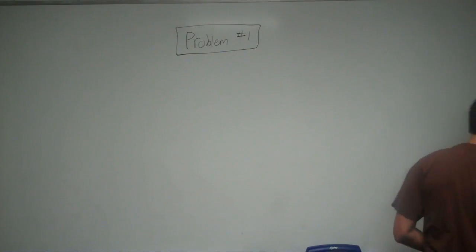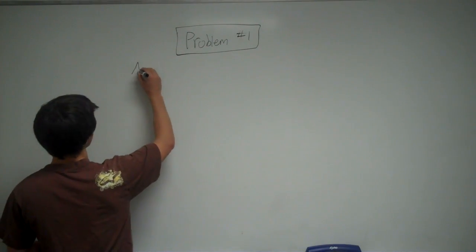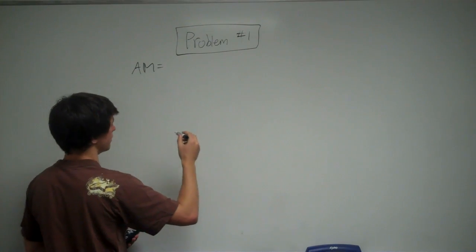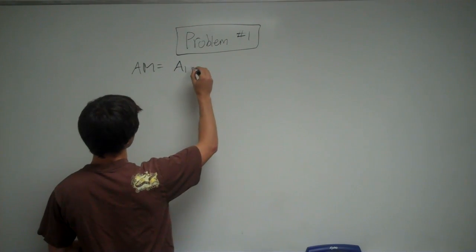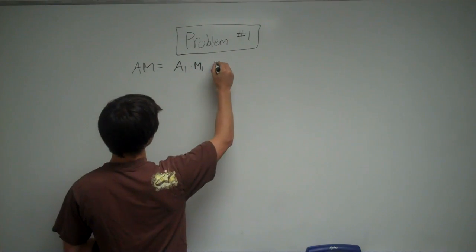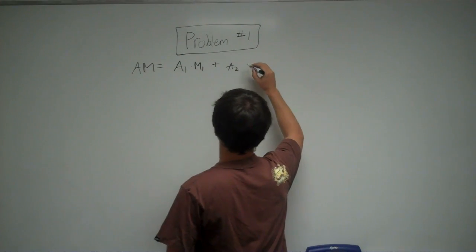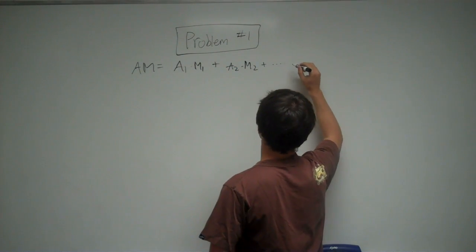So there's a formula we can use for this. The formula says that the atomic mass equals the abundance of compound 1 times the mass of 1, plus the abundance of compound 2 times the mass of 2, and so on.